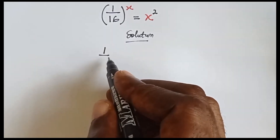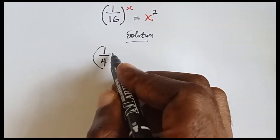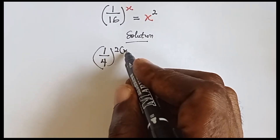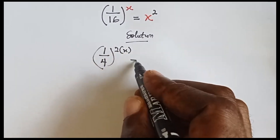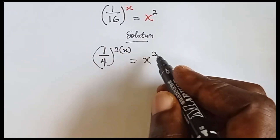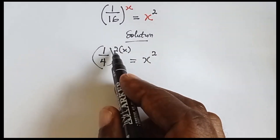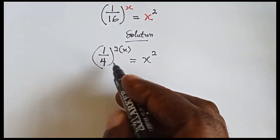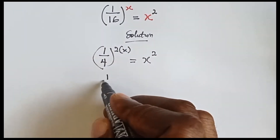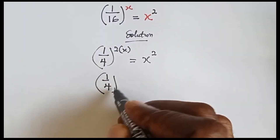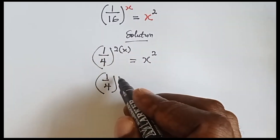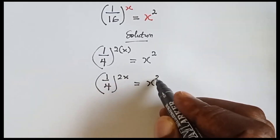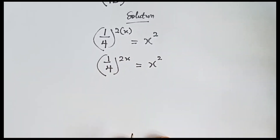We have 1 over 16, which can also be written as 1 over 4 raised to power 2, then we put the x equals to x raised to power 2. This gives us 1 over 16, and when we open the brackets we have 2 times x giving us 2x equals to x raised to power 2.